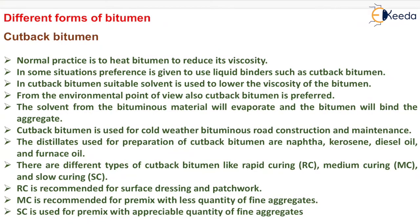The different forms of bitumen — cutback bitumen. Normal practice is to heat bitumen to reduce its viscosity. In some situations, preference is given to use liquid binders such as cutback bitumen, where a suitable solvent is used to lower the viscosity of the bitumen. From the environmental point of view, cutback bitumen is also preferred. The solvent from the bituminous material will evaporate and the bitumen will bind the aggregate. Cutback bitumen is used for cold weather bituminous road construction and maintenance. The distillates used for its preparation are naphtha, kerosene, diesel oil and furnace oil.